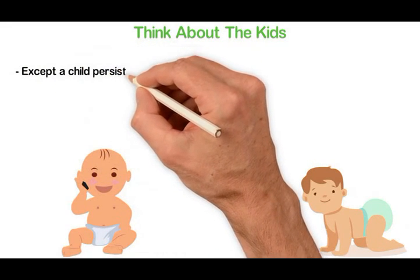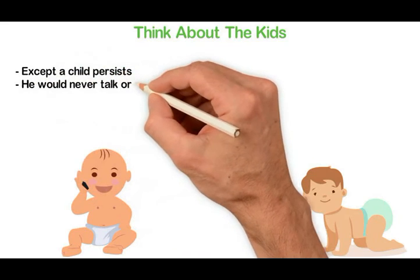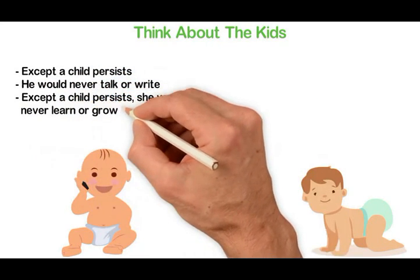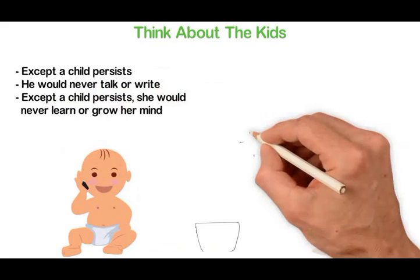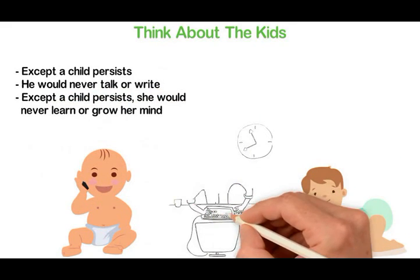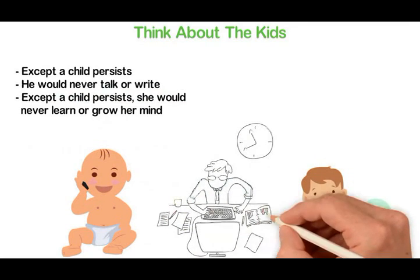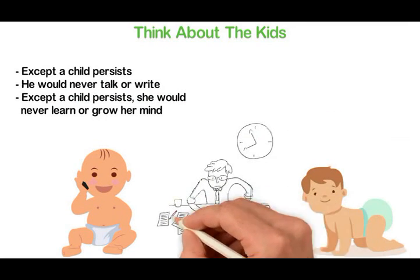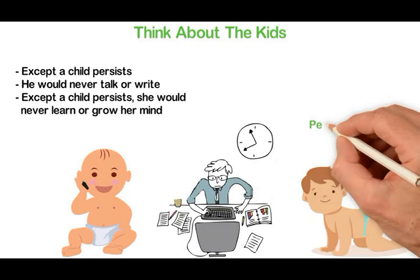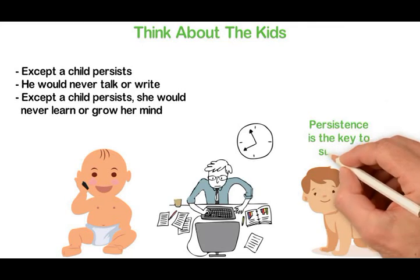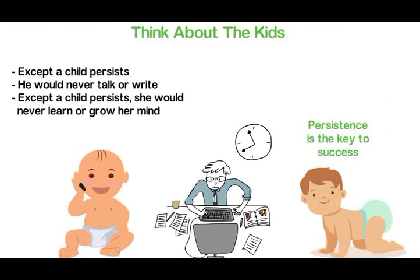Except a child persists, he will never crawl. Except a child persists, he will never talk or write. Except a child persists, she will never learn or grow her mind. Children achieve all they do by persistence. If we as adults think there's any other way to achieve success other than persisting, we're simply fooling ourselves. You want success? You'll experience several failures. The only way out is the way of persistence.